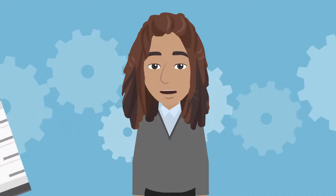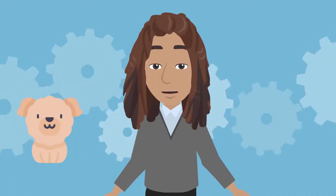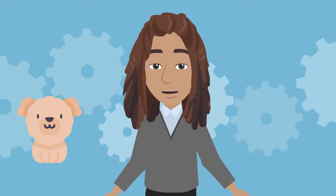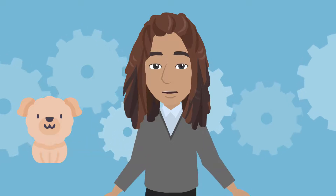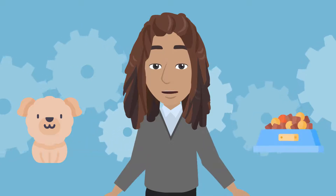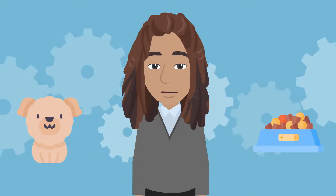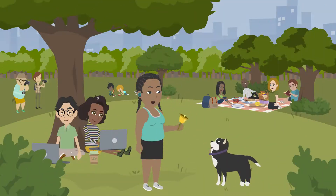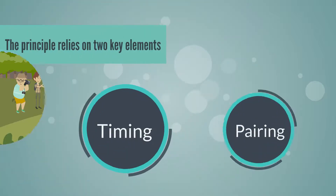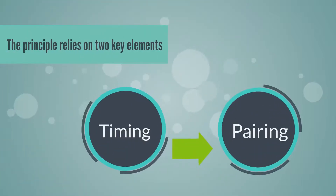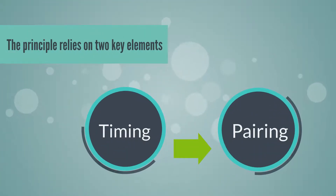After repeated pairing, the dogs started to salivate — now a conditioned response — merely at the sound of the bell, even when food was not presented. This conditioning process showcases how an organism can be trained to respond to a previously neutral stimulus. The principle relies on two key elements: timing and pairing.